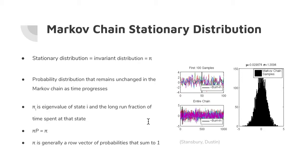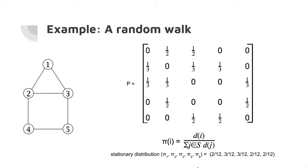A little bit more about the stationary distribution: it's also called the invariant distribution, and they're both represented by lowercase pi. It's the probability distribution that remains unchanged in the Markov chain as time progresses. Pi sub i is the eigenvalue of the state i and the long-run fraction of the time spent at that state.